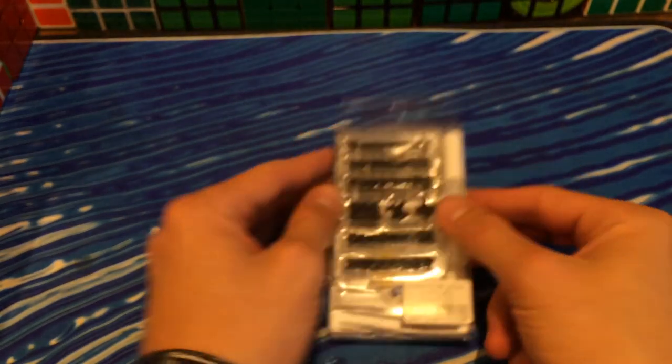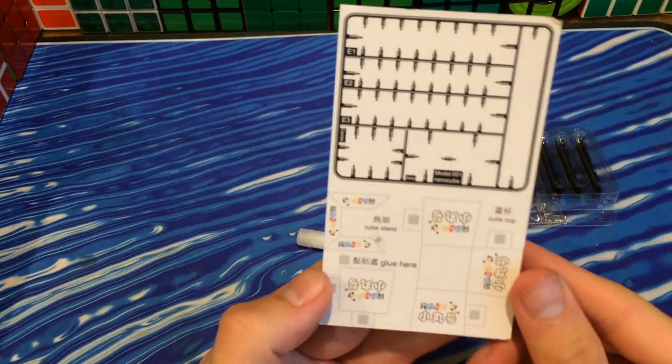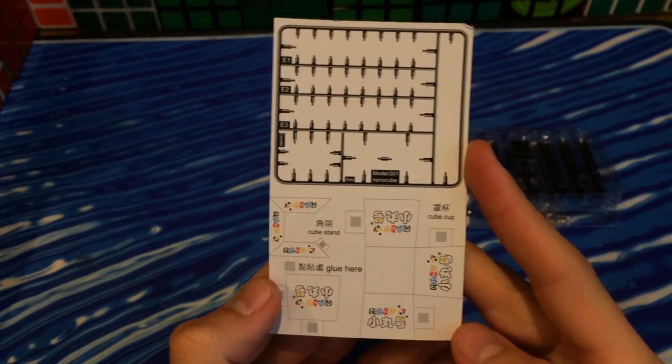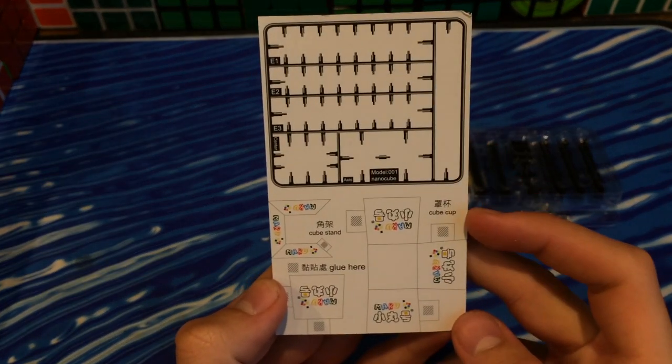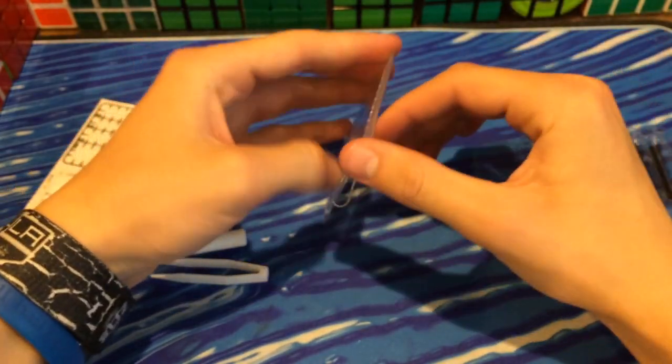Anyways, let's get into this. Something really cool - it comes with some things you can cut out. It comes with a cube stand, a little cube cup, and this little bag. There's a little bag for the actual cube, which is pretty cool.